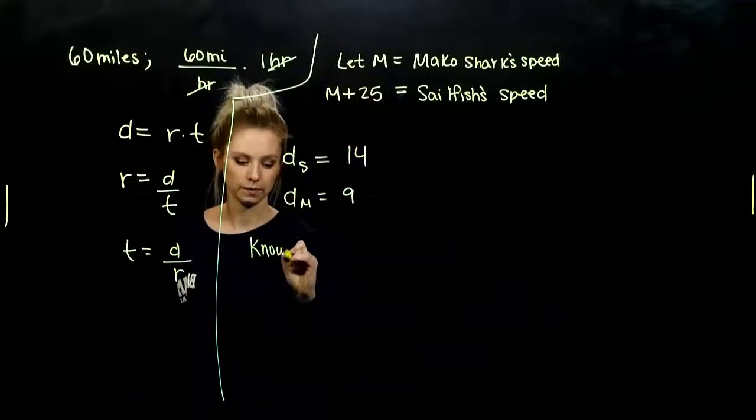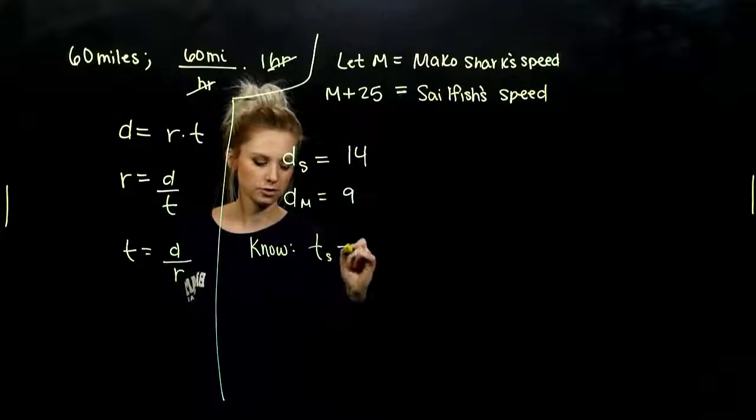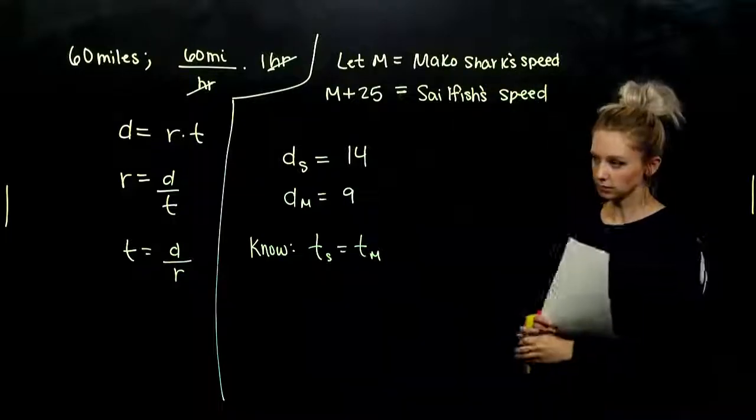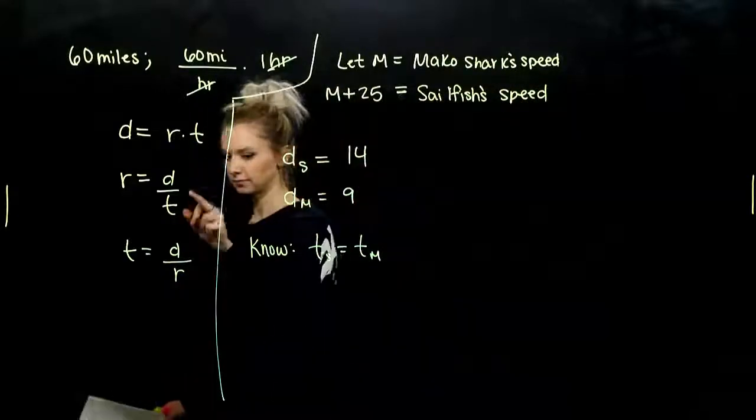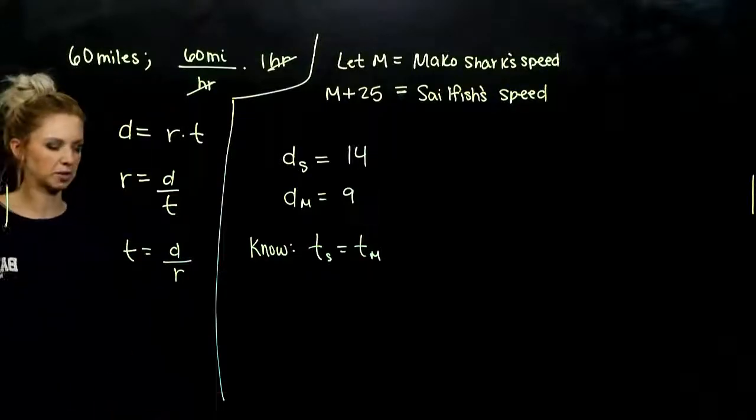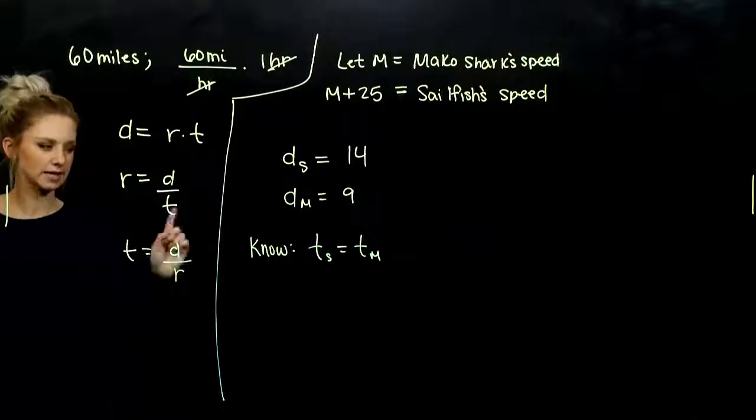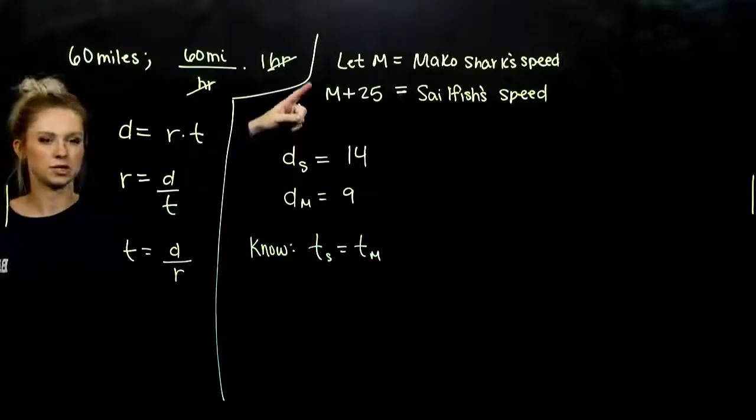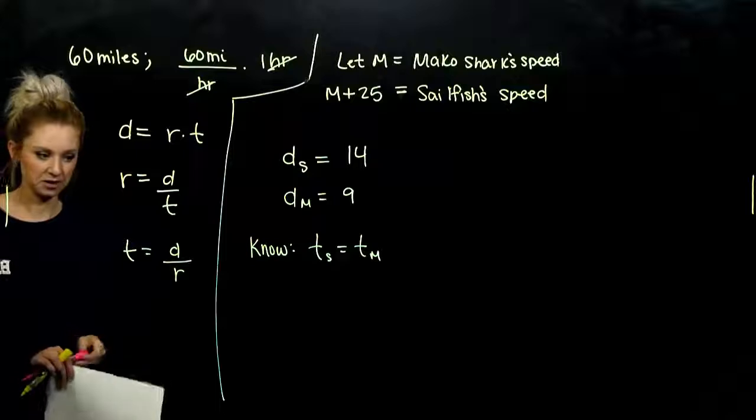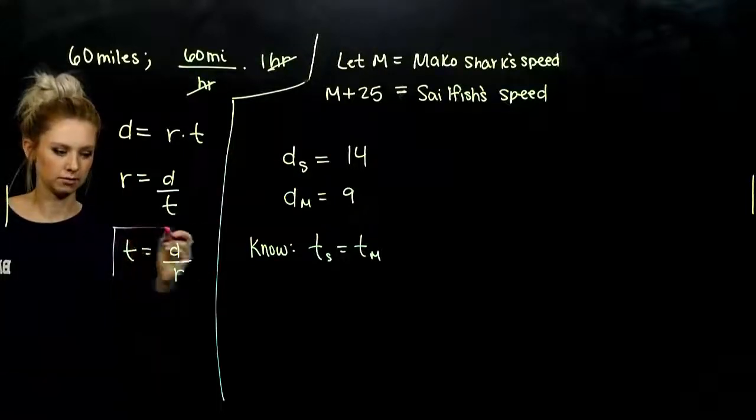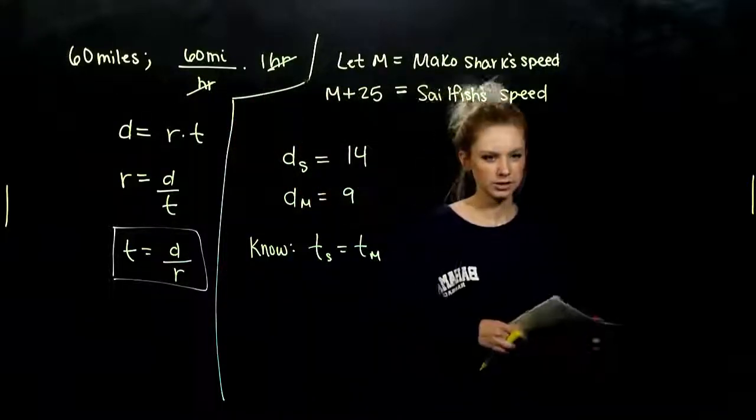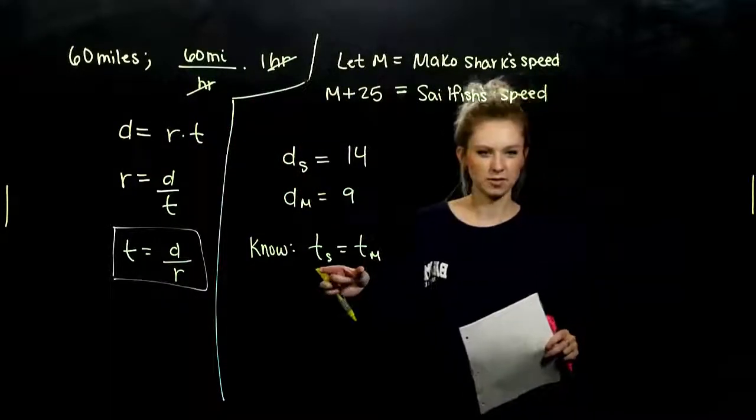So what do I know? Time of the sailfish is the same as the time as the mako. So as we look to pick from our dirt formula assortment, which one is going to be the most helpful? I need to set the times equal to each other. And I have information about the rate and distance. So my winner is going to be this very last version. Time is distance divided by rate.